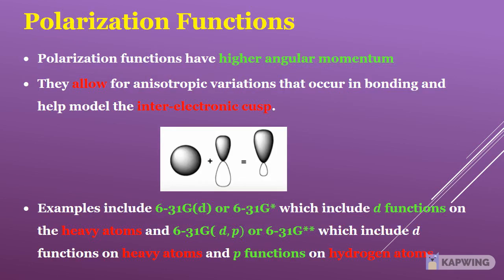Polarization functions have higher angular momentum; they allow for anisotropic variations that occur in bonding and help model the inter-electronic cusp. Examples include 6-31G* which includes d functions on the heavy atoms, and 6-31G** which includes d functions on heavy atoms and p functions on hydrogen atoms.